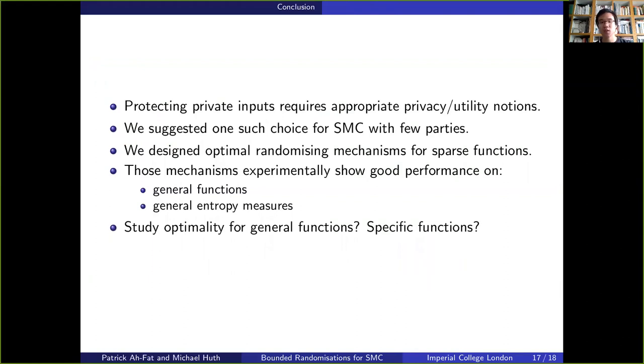To conclude, we showed that protecting private inputs requires the appropriate notions of privacy and utility. We suggested one such choice that enables us to reason about privacy in secure multiparty computation with few parties. Under that model, we designed optimal randomizing mechanisms for sparse functions. And we showed that those mechanisms show good performance on general functions and under general entropy measures.